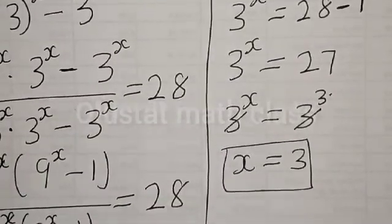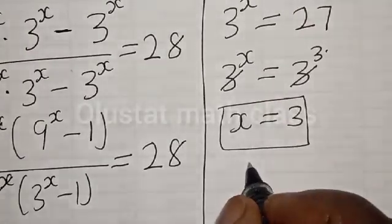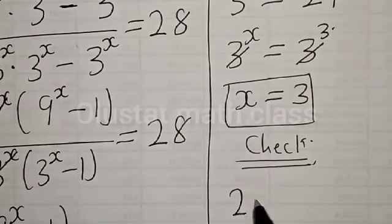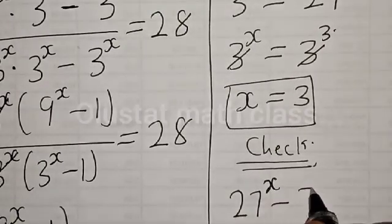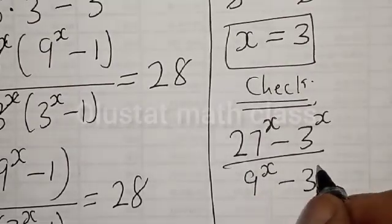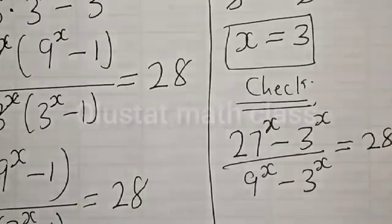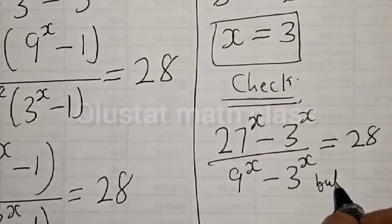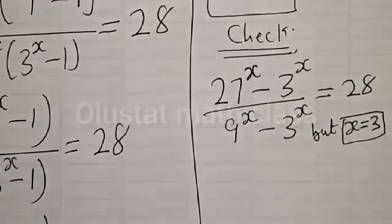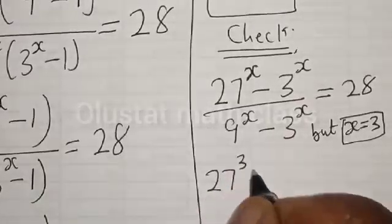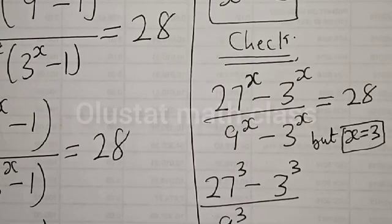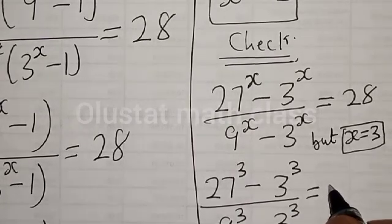Then we can check to confirm if our answer is right or wrong. We have the original equation: 27 raised to power s minus 3 raised to power s, divided by 9 raised to power s minus 3 raised to power s, must be equal to 28.